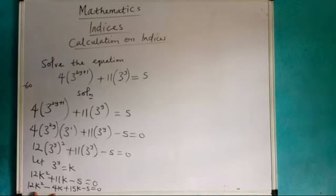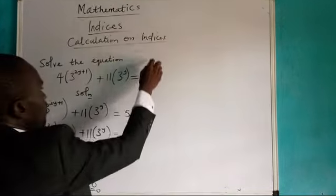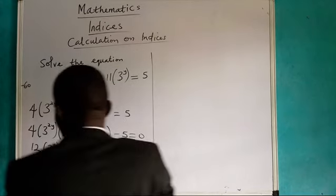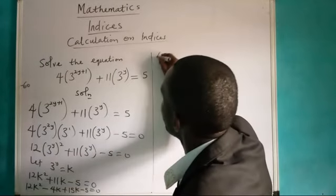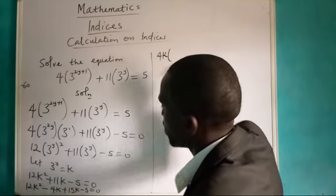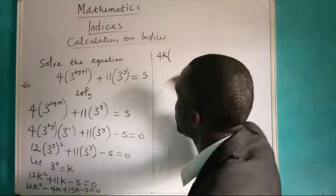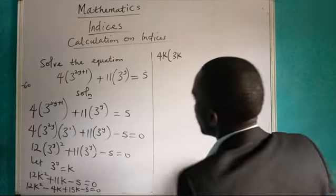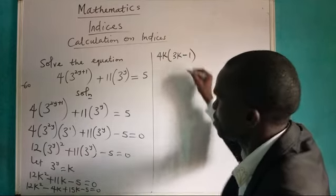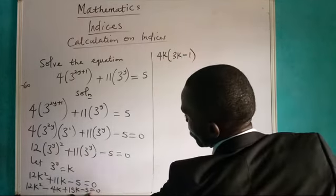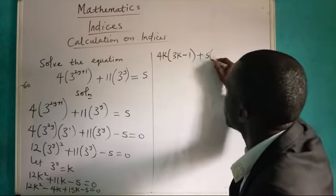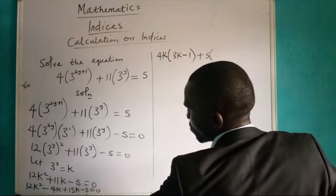I need to pick this first to factorize. For this one, if I factorize, what is the highest common factor? We have 4k at the highest, and we divide 12k squared and we have 3k. We also have plus 5, plus 5 is the highest common factor here.